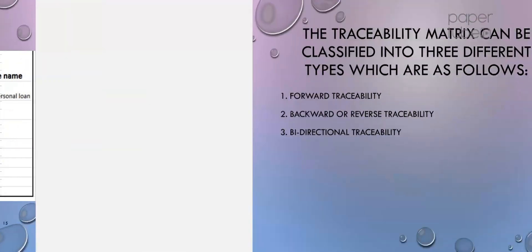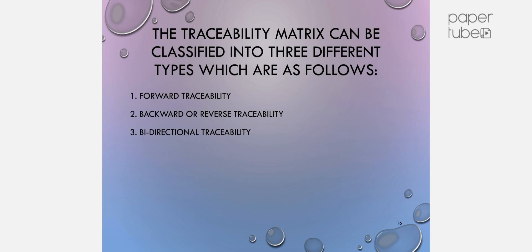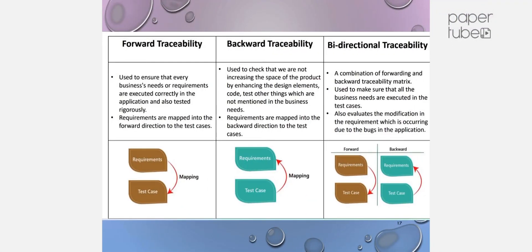There are three types of traceability matrix: forward traceability, backward traceability or reverse traceability, and bidirectional traceability. Forward traceability is used to ensure that every business need or requirement is executed correctly in the application and also tested rigorously. Requirements are mapped in the forward direction to the test case.